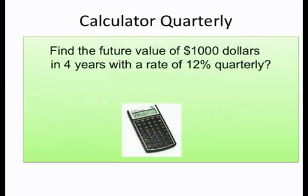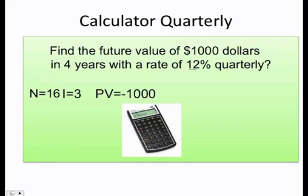Finally, in the calculator, I do n equals 16. Remember, that comes from 4 times 4. i equals 3, that comes from 12 divided by 4. PV is the same, payment is zero because we're not making any payment, and finally your future value is going to be $1,604.71.